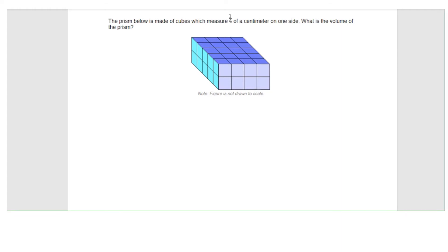To find the total number of cubes, it's really quite simple because you can literally count. You have one, two, three, four, five cubes along the bottom layer — along the length — and you have one, two, three, four cubes along the width.